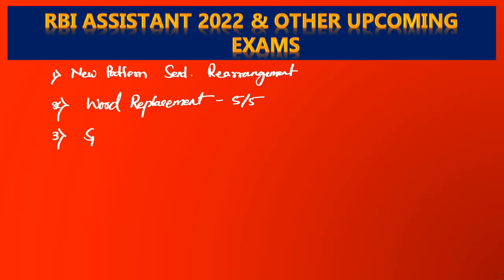Next is spelling mistake — this is also quite easy. In fact, in RBI Assistant last year, questions did come from spelling mistakes. With practice, you can get five out of five from this topic as well.